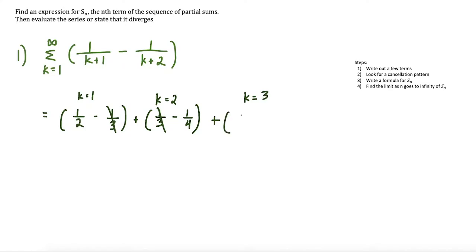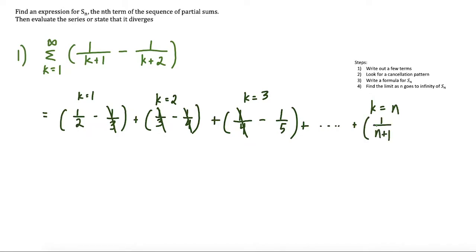At k equals 3, we have 1 over 3 plus 1, which is 1 over 4. Each new term in the next set of parentheses cancels out the term before it, and the only thing that's left is the last term. We have minus 1 over 3 plus 2, which is 1 over 5. So if we follow this pattern all the way down to k equals n, as n goes to infinity, we're going to have 1 over n plus 1 canceling minus 1 over n plus 2. If we call this expansion up to the nth term s of n, then the sum of the first n terms is going to start with 1 half.